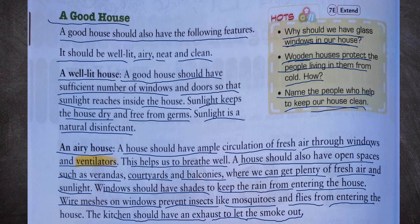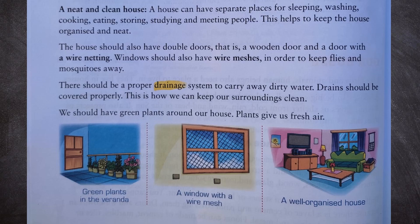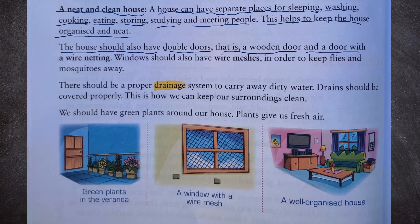A neat and clean house should have separate places for sleeping, washing, cooking, eating, storing, studying, and meeting people — this helps keep the house organized. The house should also have double doors: a wooden door and a door with wire netting. Windows should also have wire meshes to keep flies and mosquitoes away.